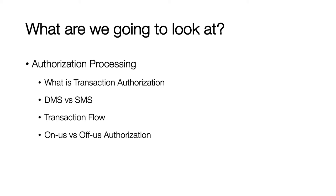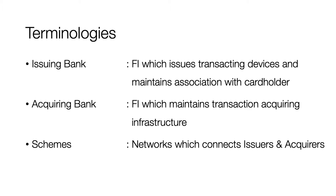We will cover the business and technical flows of an authorization, and we'll briefly look at what is known as an on-us authorization. Before we start into details, some very basic terminologies that we all should learn: an issuing bank is the financial institution to which the customer applies and gets a physical or virtual embossed card.